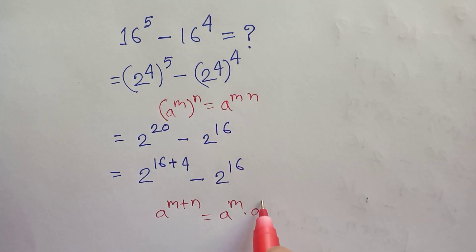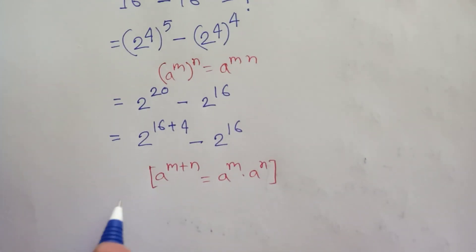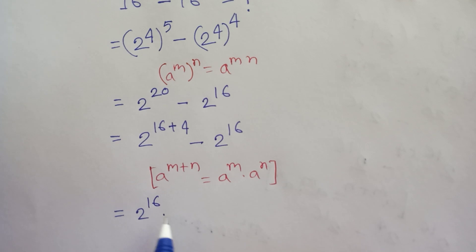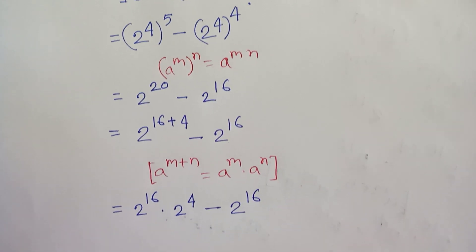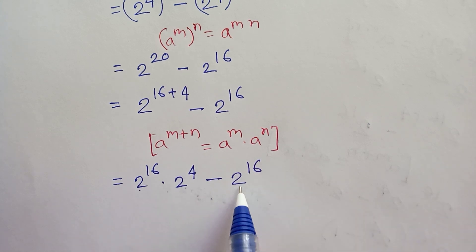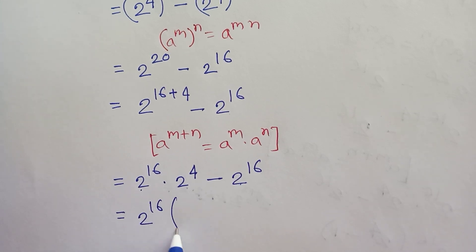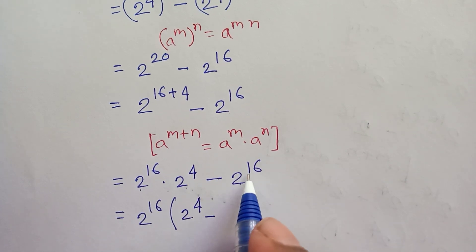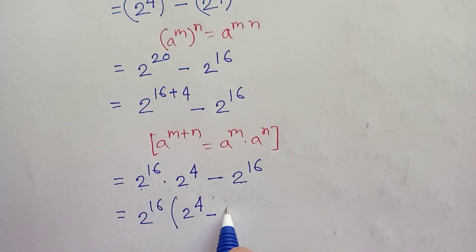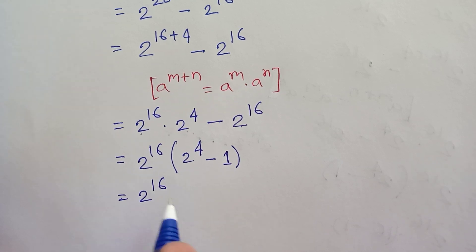We know that a^(m+n) equals a^m times a^n. So according to this formula, 2^(16+4) becomes 2^16 times 2^4, minus 2^16. Since 2^16 is common in both terms, we factor it out: 2^16 times (2^4 minus 1).